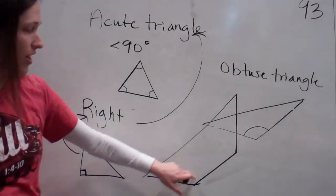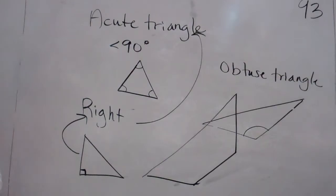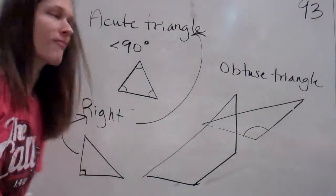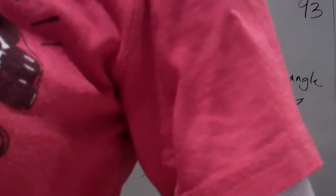So, if this angle's obtuse and this angle's obtuse, you cannot have a triangle. So, there's only going to be one angle that's obtuse. Everybody understand? Okay? That's lesson 93. Wow. Simple as.